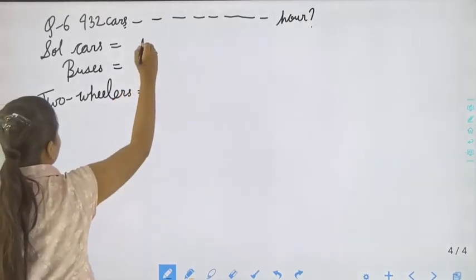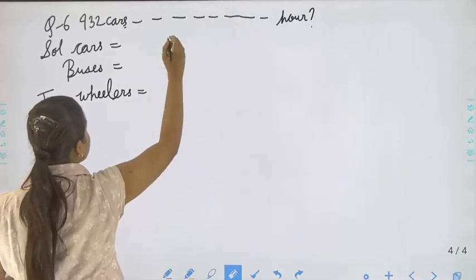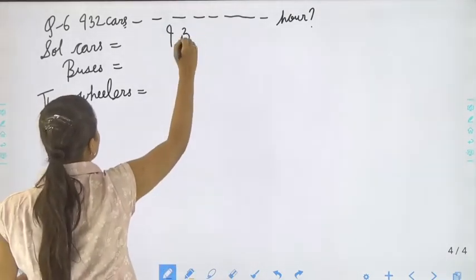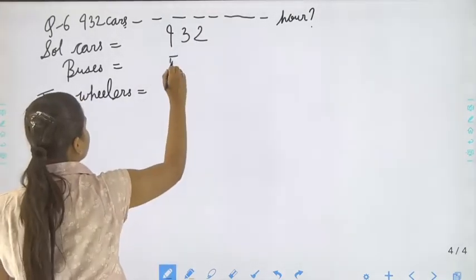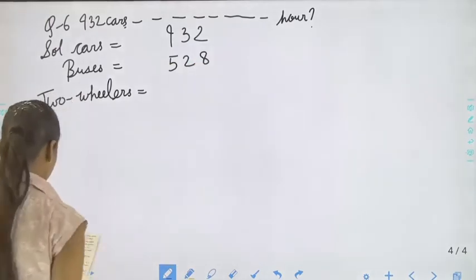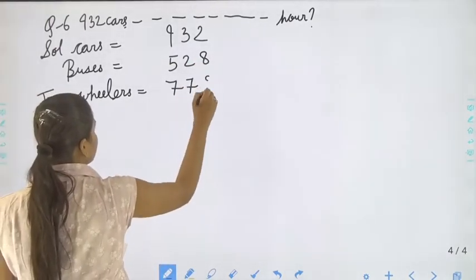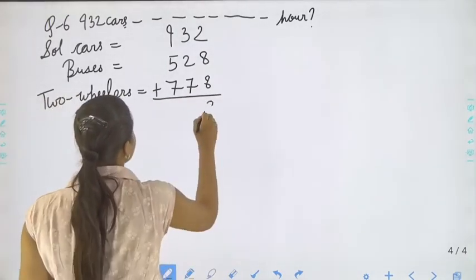Cars equals to 932, and buses, that is 528, and the two-wheelers, that is 778. Again we have to do addition.